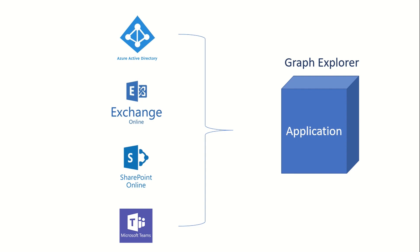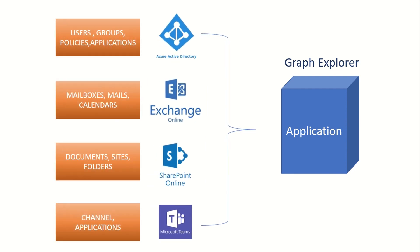Depending upon the role of these services, they hold different sets of information. In Azure AD you have users, groups, policies, and applications. In Exchange you have mailboxes, emails, and calendars. In SharePoint you have sites and folders that contain documents. And when it comes to Teams, you have chats, channels, and different other applications which are integrated with Microsoft Teams.